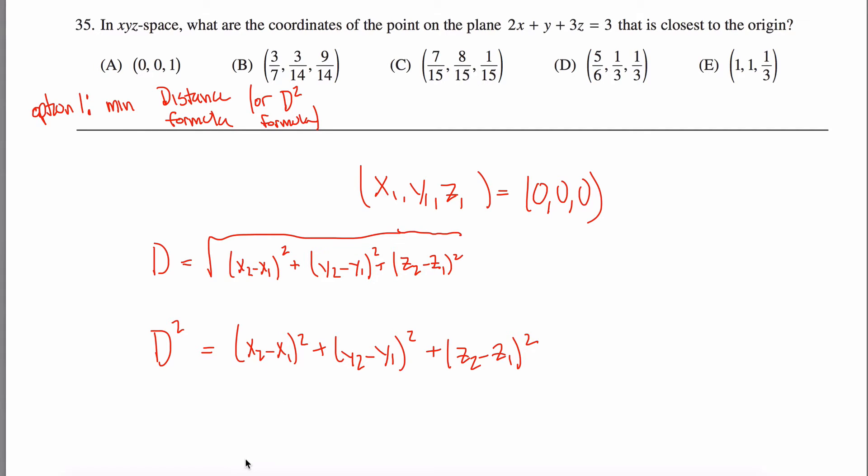If the distance squared is as small as possible, then the distance is as small as possible because squaring is a monotonically increasing function when your input is non-negative. I mean, it's not even as bad as it seems because one of the points are all zeros.